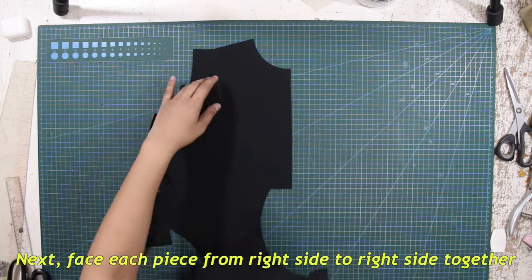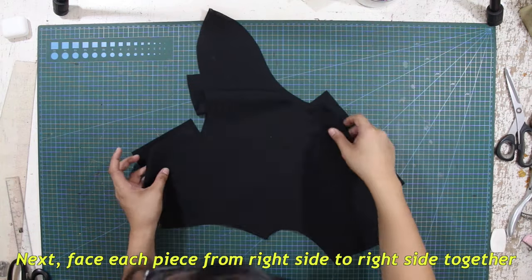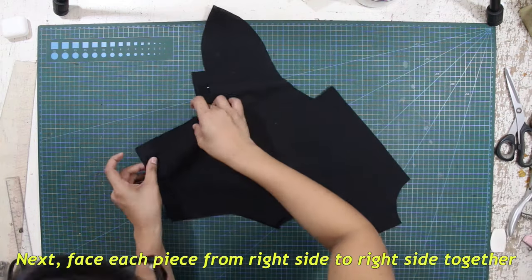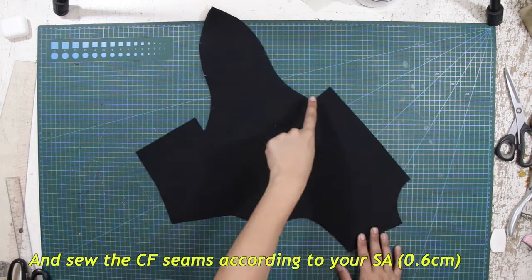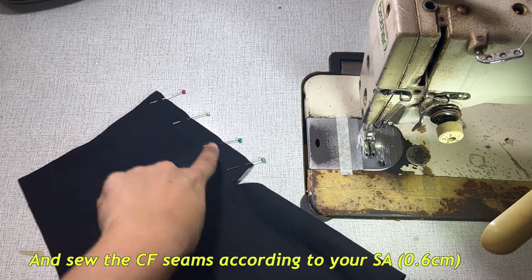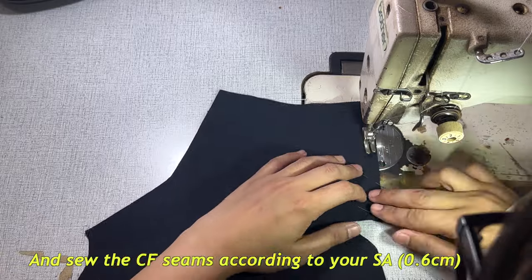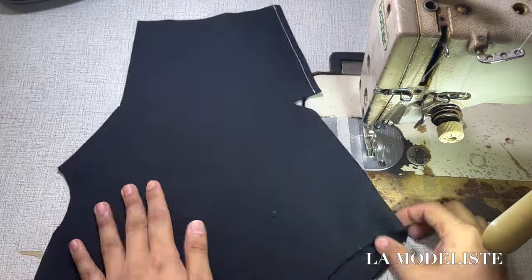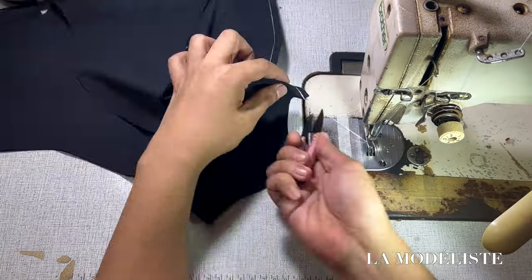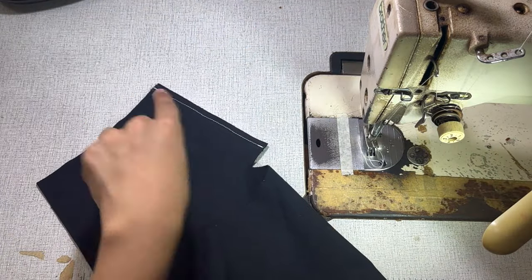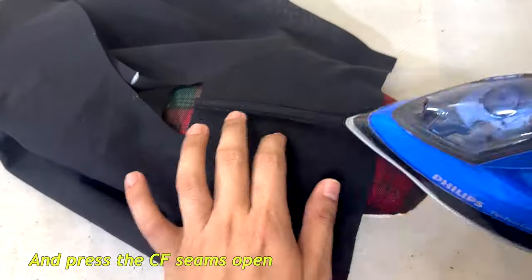Next, face each piece from right side to right side together and sew the center front seams according to your sewing allowance. And press the center front seams open.